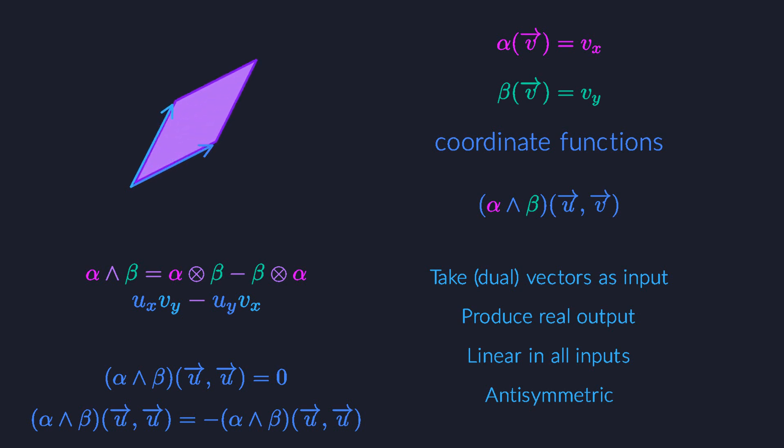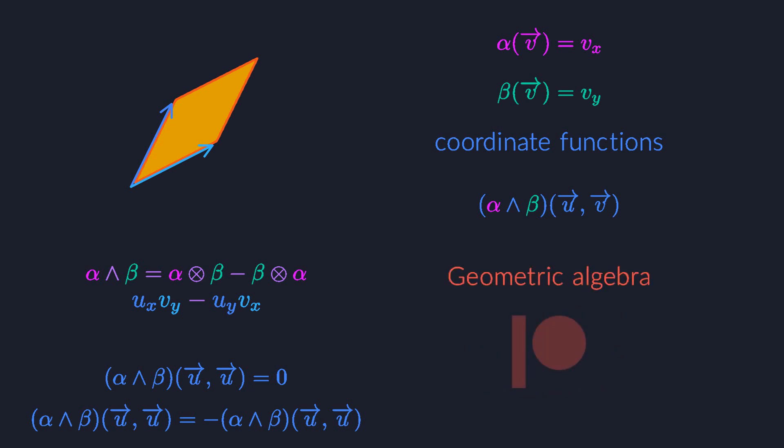Here's another important consequence of anti-symmetry. When you swap the order of the two input vectors, the sides of the parallelogram, the sign of the area flips from positive to negative, or vice versa. This means that what we are measuring is not just the absolute value of the area, but also its sign, which tells us what the current orientation of the parallelogram is. This is going to play a central role in the series on geometric algebra, which is coming up next. You can already watch the first videos on Patreon, by the way.